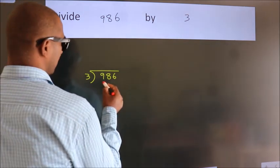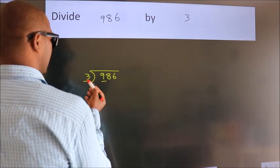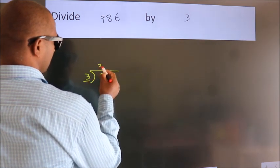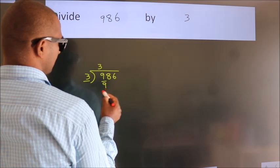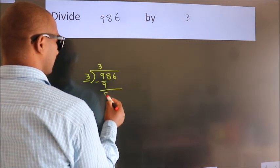Here we have 9, here 3. When do we get 9? In 3 table. 3 3's, 9. Now we should subtract. We get 0.